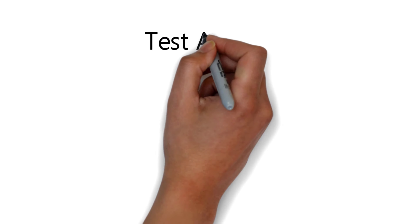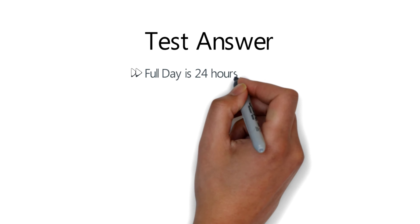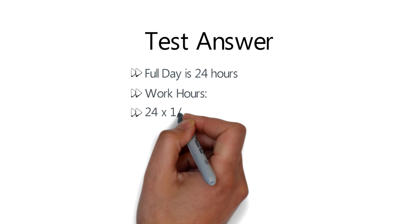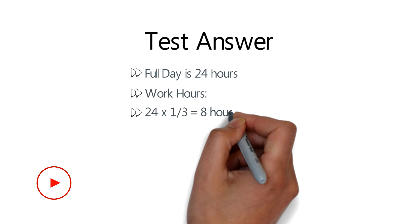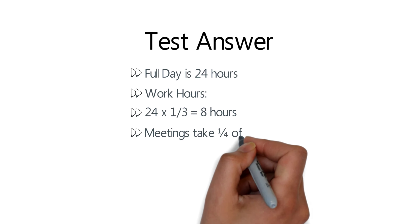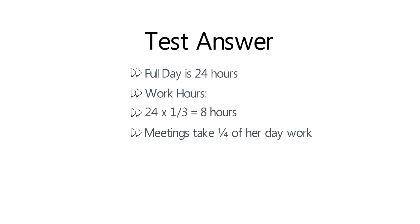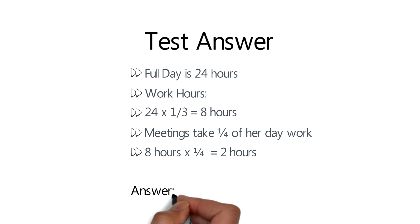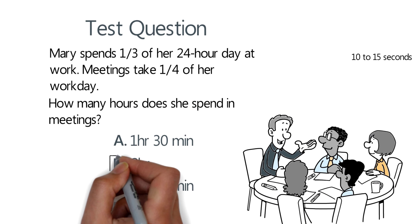A full day has 24 hours. Mary's working hours represent one-third of the full day, which is 8 hours — calculated by dividing 24 by 3. Meetings take one-fourth of her work day, so to calculate time spent in meetings we multiply 8 hours by one-fourth, and the result is 2 hours. The correct answer is choice B: two hours. Hopefully you've nailed this question and now know how to answer similar problems on the test.